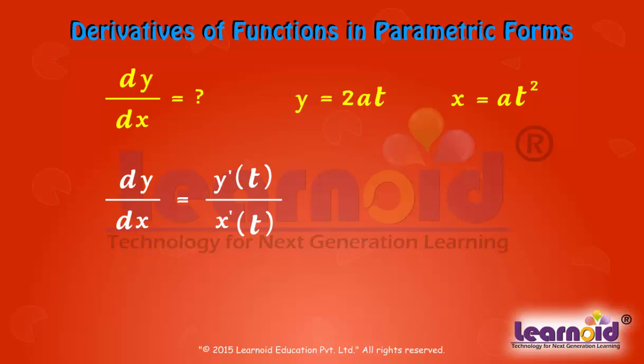Substituting for x and y in terms of t, we get dy/dx equals d/dt of 2at divided by d/dt of at squared.